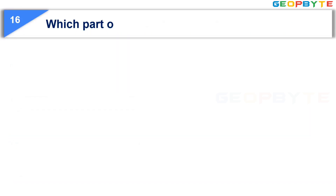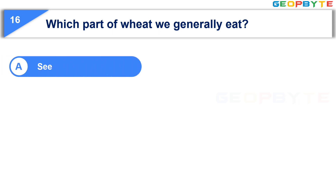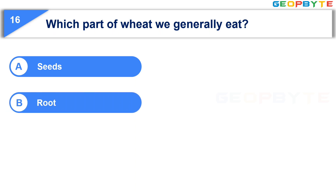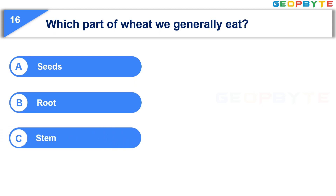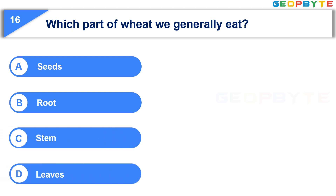Moving to the sixteenth question: Which part of wheat do we generally eat? Option A, Seeds. Option B, Root. Option C, Stem. Option D, Leaves. Your time starts now.